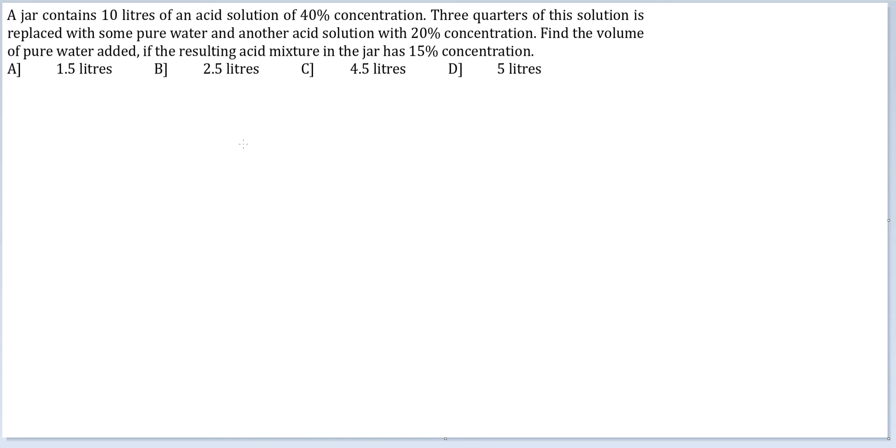So initially in the jar you had water 6 and acid as 4, 10 liters total. Then something has happened, and then you are left with 1.5 liters of acid and 8.5 of water because finally you have 15% concentration.